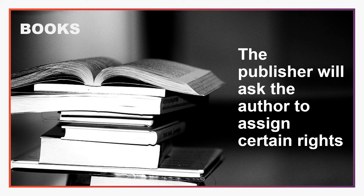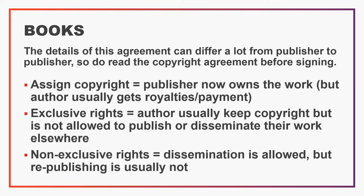When publishing a book or a book chapter, the publisher will ask the author to assign certain rights. Copyright agreements when publishing in books vary a lot from publisher to publisher, so it is important to read the copyright agreement in full. In general, there are three different options. If you assign the copyright to the publisher, the publisher now owns the work, however the author usually agrees rates for royalties. If you give the publisher exclusive rights to publish, you as the author usually keep the copyright but you are not allowed to publish or disseminate the work elsewhere. If you give the publisher non-exclusive rights, you are usually allowed to disseminate the work, but usually you cannot republish.